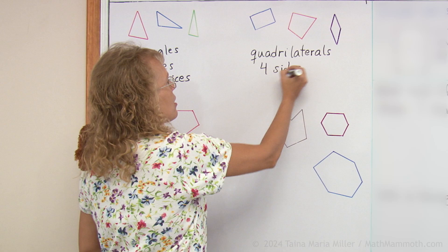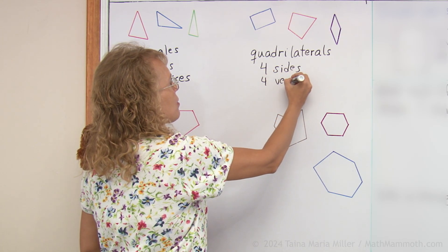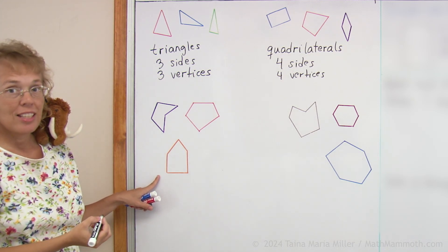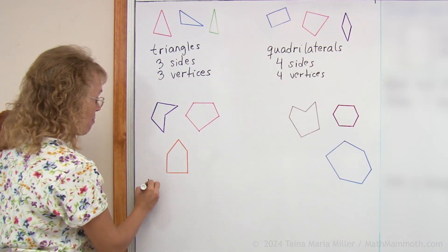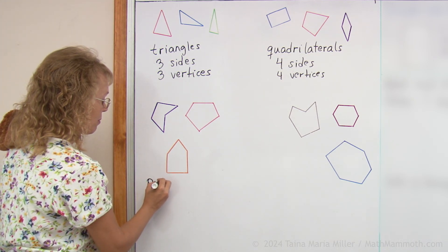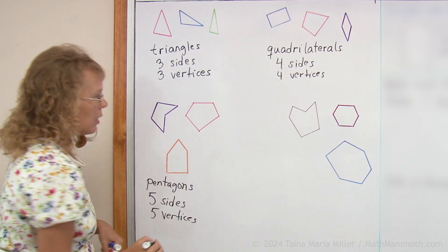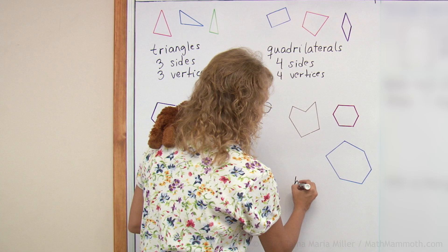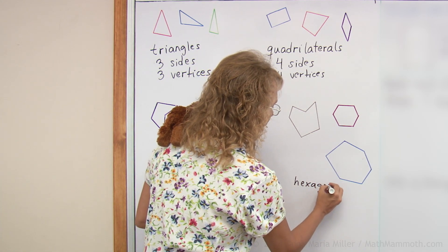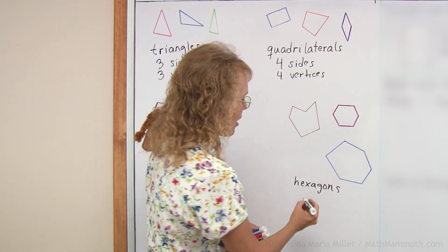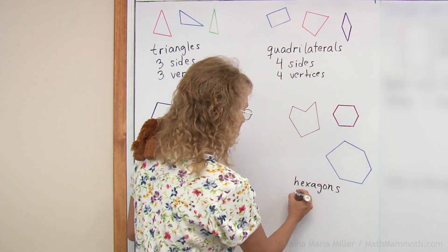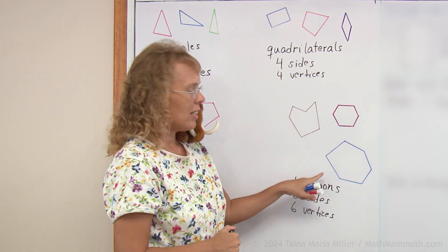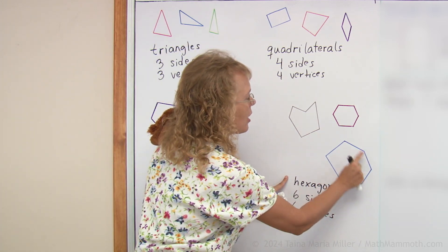Four sides, four vertices. And these ones have five sides and five vertices — they are pentagons. And these ones have six sides and six vertices — they are hexagons. These words come from the Greek language, so they are a little difficult to remember. For example, hexagon comes from six and angle, meaning these corners.